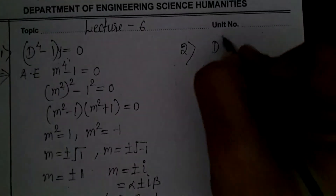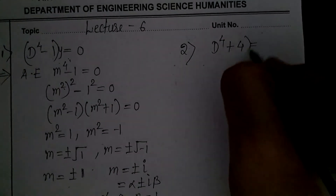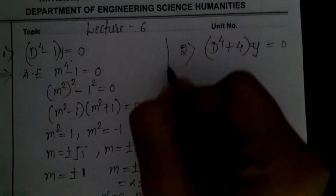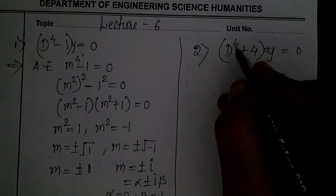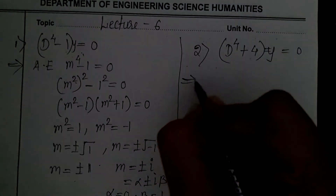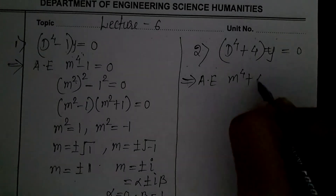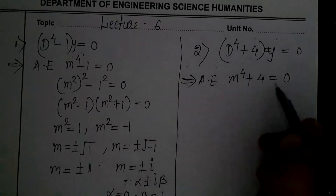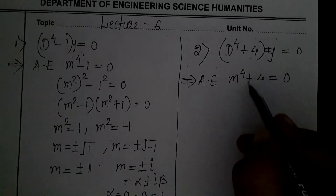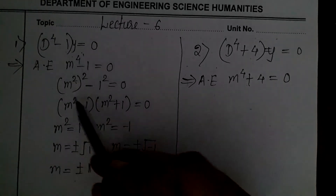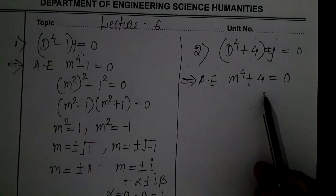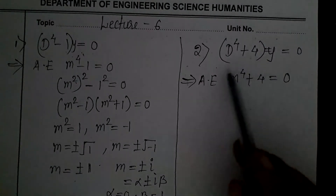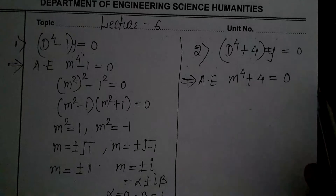The second example is (D⁴ + 4)y = 0. The order is again 4, so we must get 4 roots. The auxiliary equation is m⁴ + 4 = 0. We try to convert this into a perfect square because the middle sign is plus — we cannot directly use the a² - b² formula here, so we first convert to a perfect square and then simplify.